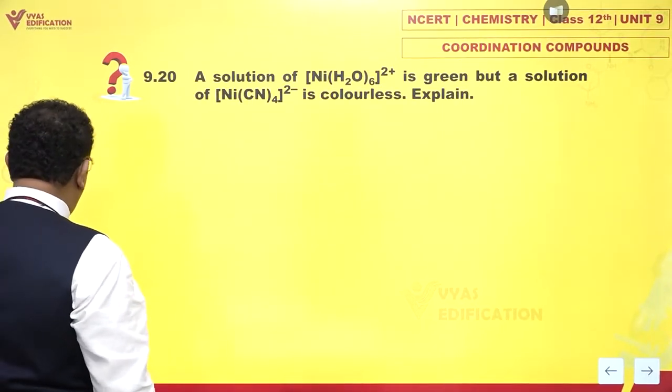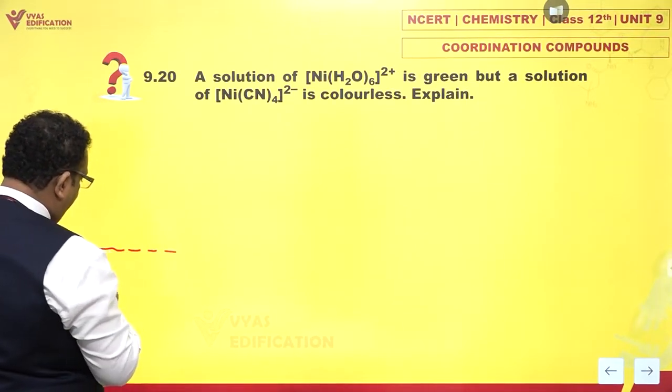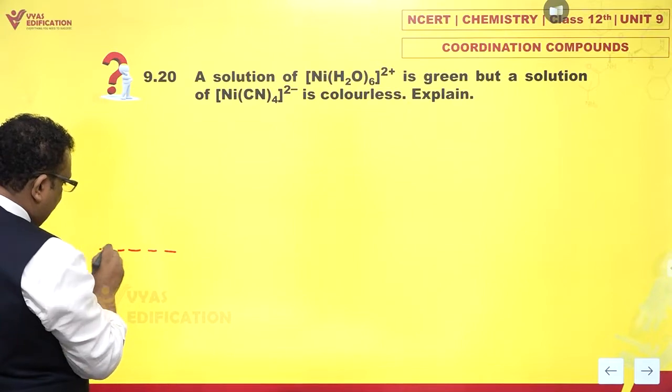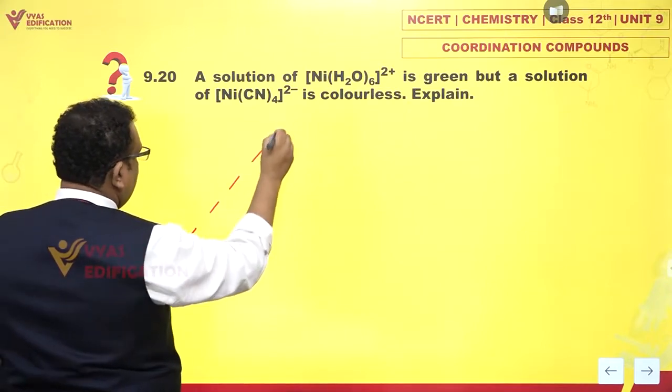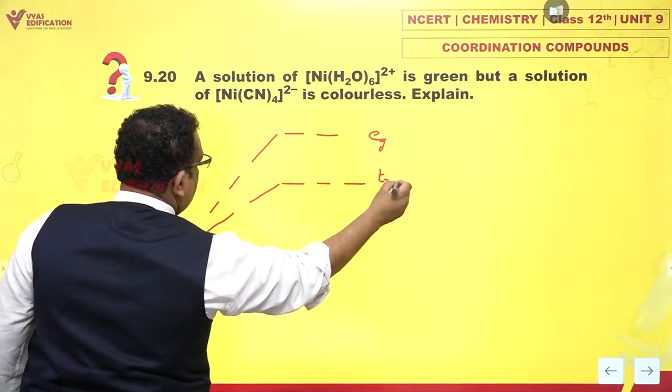Since the crystal field splitting parameter... let me draw that for you. There are 5 d orbitals, right? And when they split, EG and T2G.